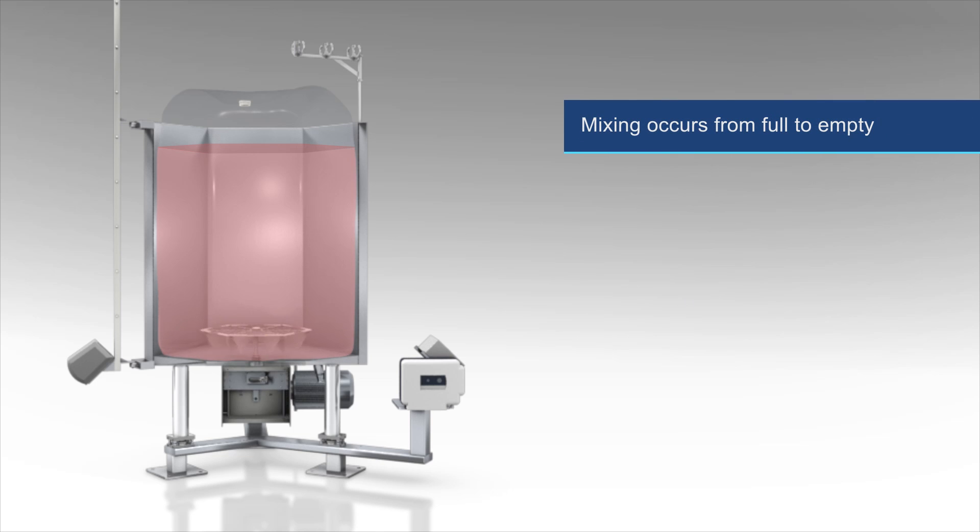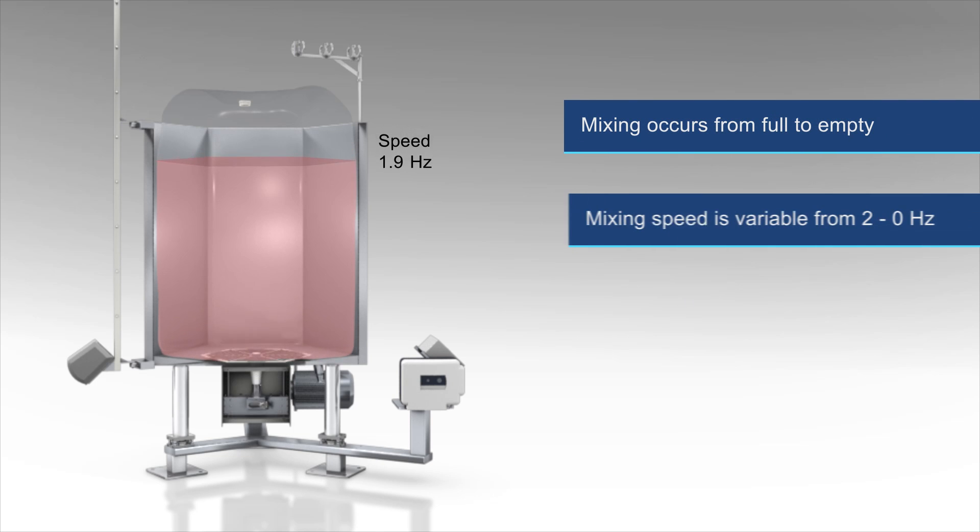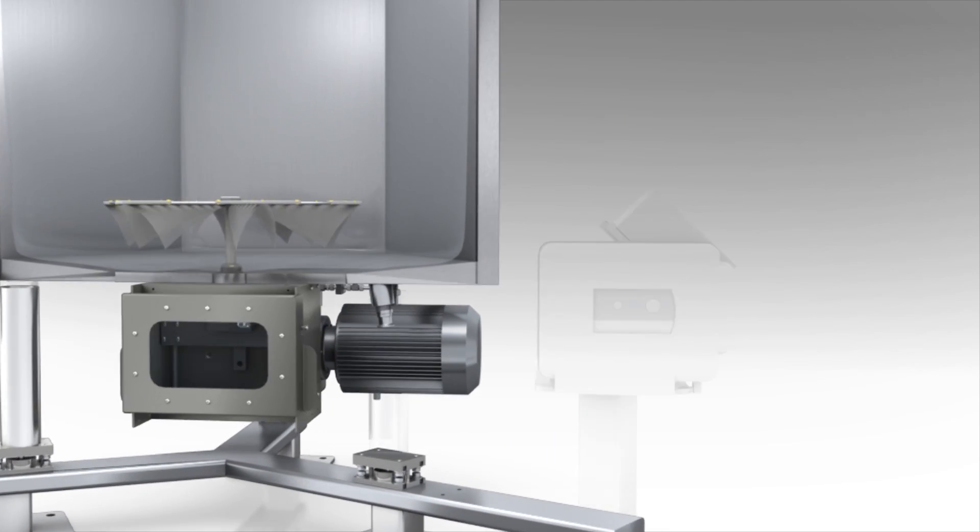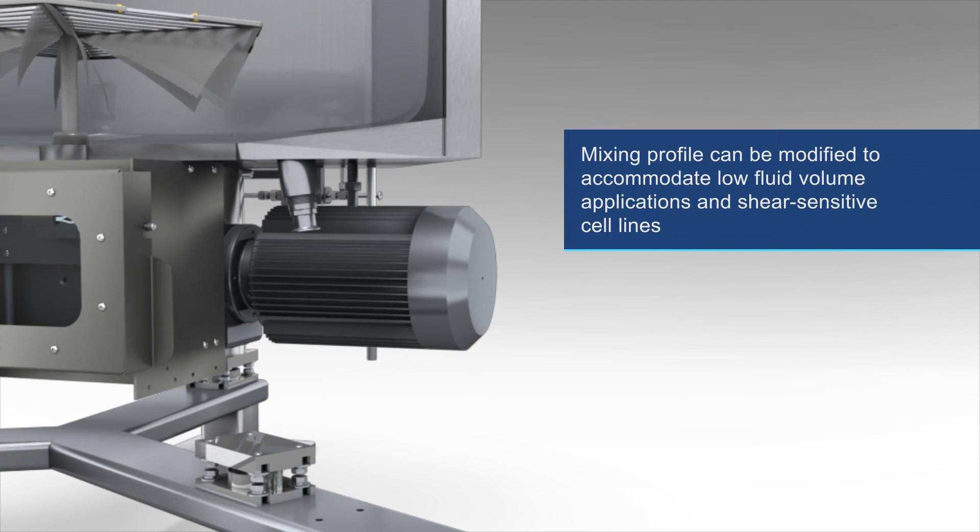Mixing occurs from full to empty. Mixing speed is variable from 2 to 0 cycles per second and is decreased as the liquid level approaches the top stroke of the mixer head at 20 to 30% of nominal volume. With the use of a servo motor and the agitation drivetrain, the mixing profile can be modified to accommodate low fluid volume applications and shear sensitive cell lines.